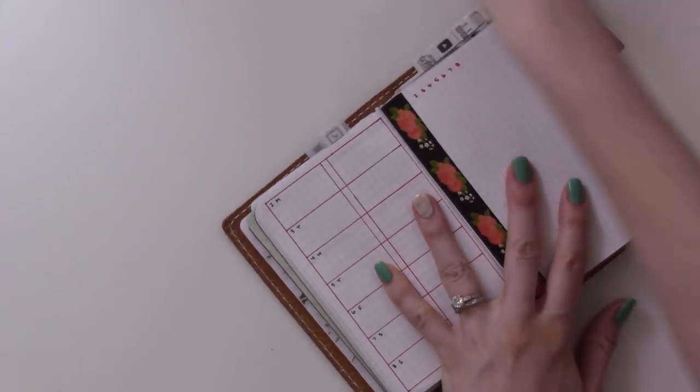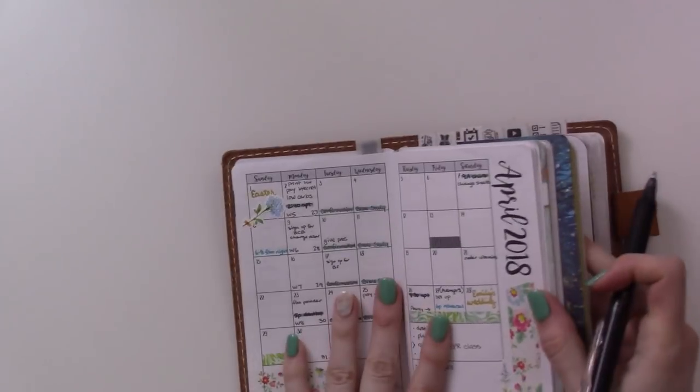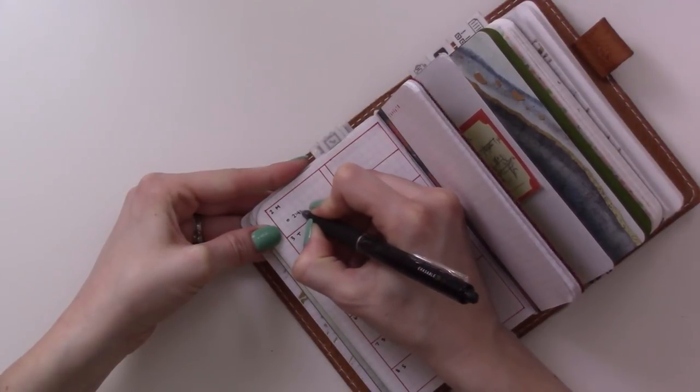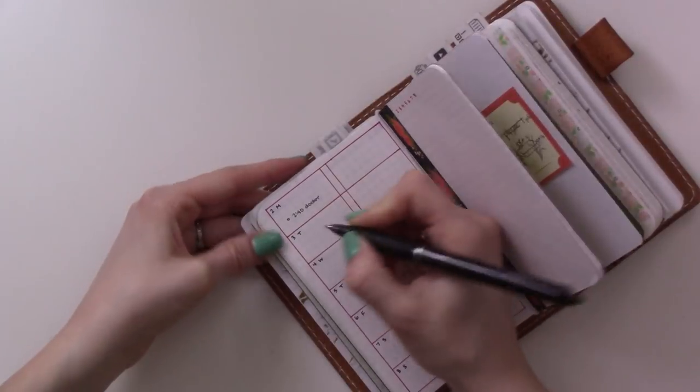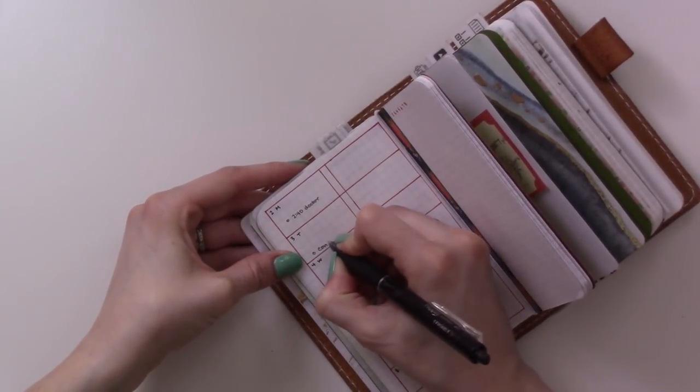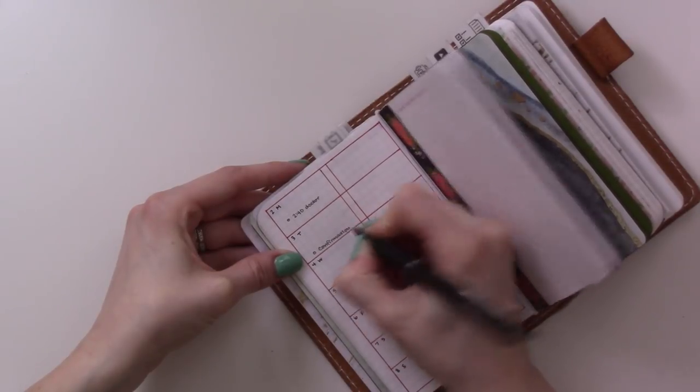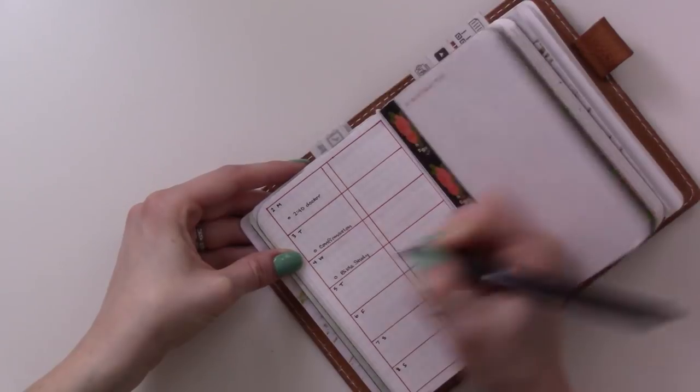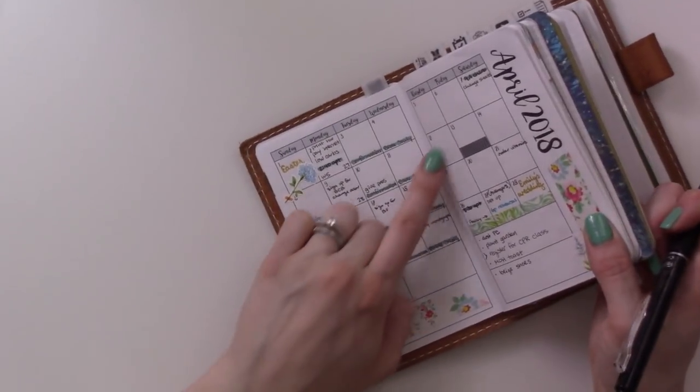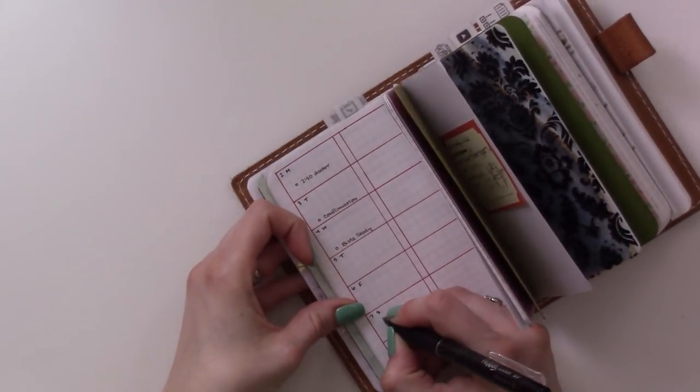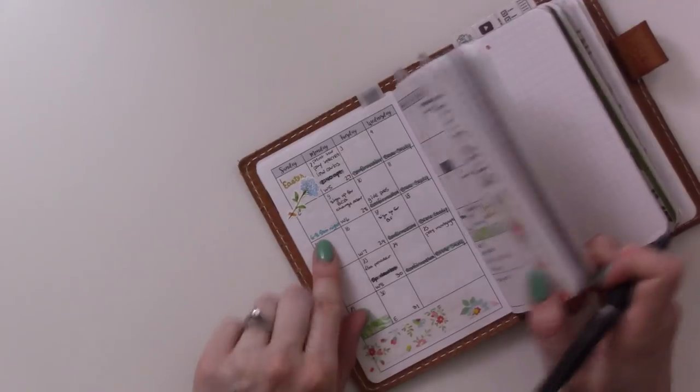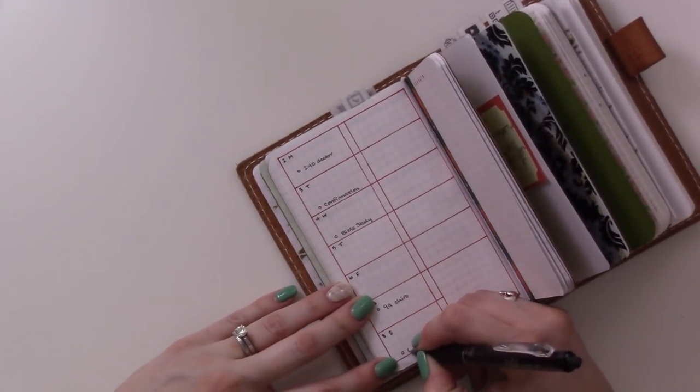We will start by just filling out all of our to-dos off of the calendar for the month. We have a doctor's appointment at 2:40, we've got our usual confirmation class on Tuesday and Bible study on Wednesday. Then I've got a chiropractor's appointment on Saturday.